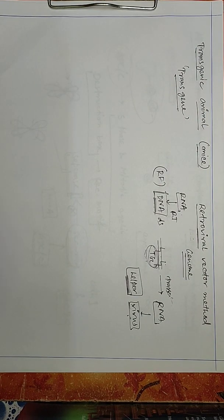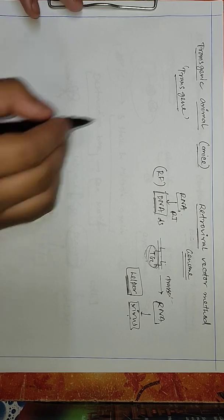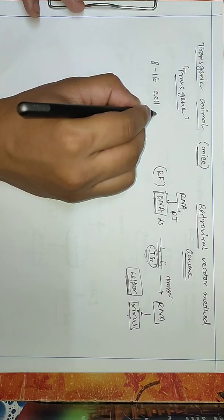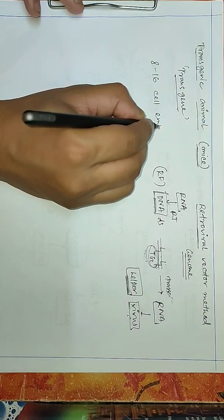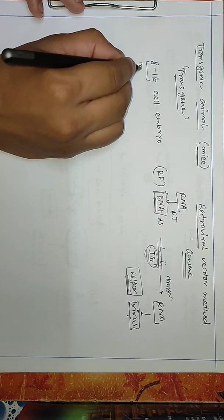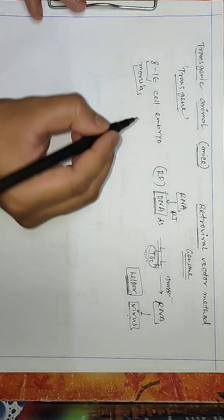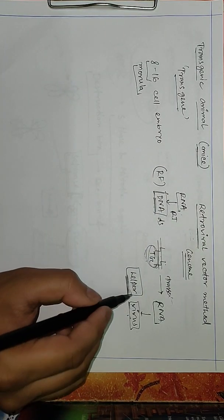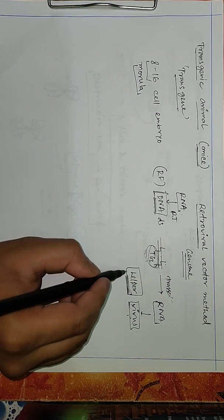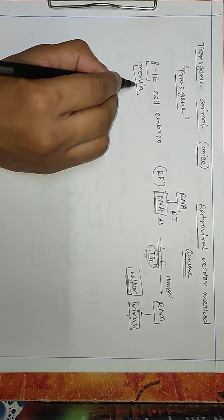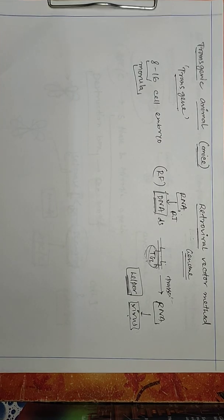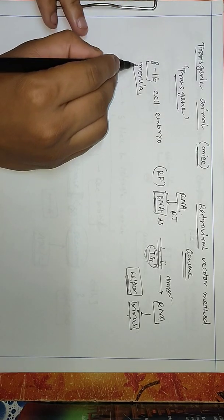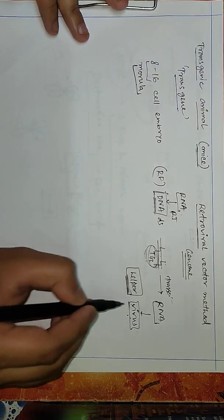The retroviral genome, we will infect mice at the 8 to 16 cell embryo stage. This is called the morula stage. We will infect this morula with that helper virus which contains the transgene. At first, we will isolate some morula, infect with this helper virus containing the transgene.